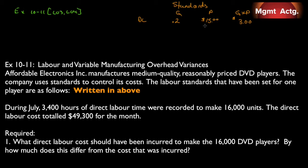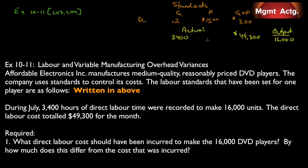During July, 3,400 hours of direct labor time were recorded to make 16,000 units. The direct labor cost totaled $49,300 for the month. We're not given the actual rate directly, but if we have the total cost and number of hours we can figure it out with division. Most of the time we don't actually need the actual rate.